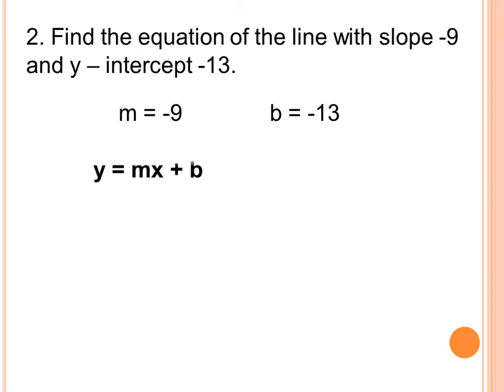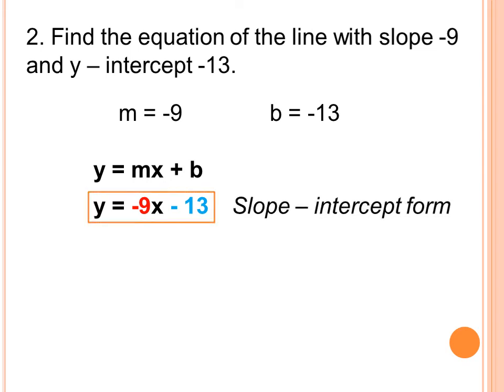Using the same process, we are going to substitute the values of m and b in the slope-intercept form of the linear equation. Replacing the values of m and b, this will be y is equal to negative 9x minus 13. This is already our answer in slope-intercept form — we just substituted the values of m and b.